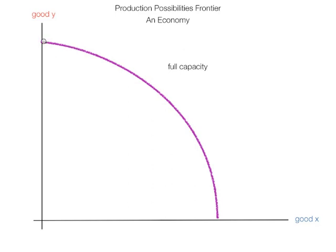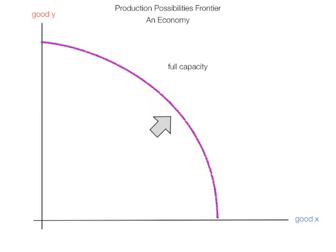This purple line is called a frontier because the economy can't produce beyond this point. It doesn't have the technological capability, so it's like a frontier that it can't go beyond.